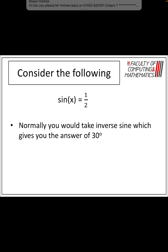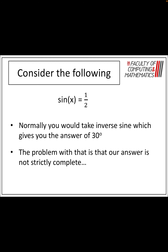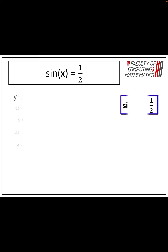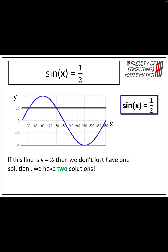So if we look at sine x is equal to a half, if we take the inverse of sine so that we're just left with x, it gives you 30. But that isn't our full solution. If we take a look at the sine graph and draw in the line y is equal to a half, you can see that that line hits the graph in two places, so we've got two solutions, not just one.